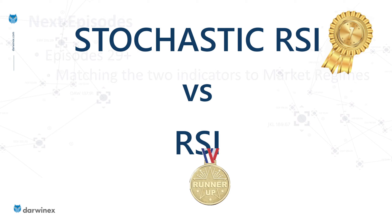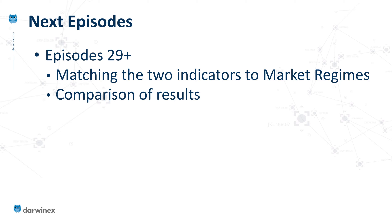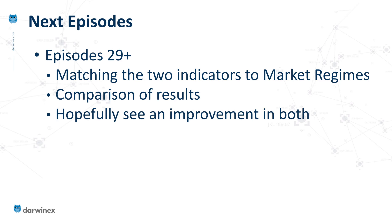So where do we go from here? In episode 29 onwards, I'll start to match these two indicators to different types of market regime and use filters in order to do that. Just like today, I'll be comparing those results to see which of the indicators proves to be more effective, and hopefully we'll see an improvement in both of them.